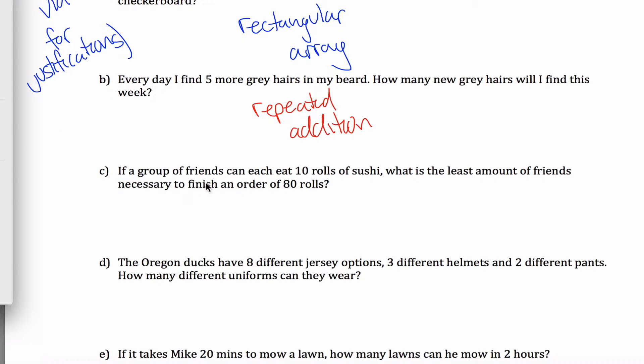The next one, if a group of friends can each eat 10 sushi rolls, what is the least amount of friends necessary to finish an order of 80 rolls? Okay, so first note that this is a division problem, not a multiplication problem. What kind of division? Well, we have two, partitive and measurement. In the partitive method, you are told how many groups you have, whereas in the measurement method, you are told the size of the groups. So I have 80 rolls, but what the question comes down to is what is this 10? Is this the size of my groups, or is this the number of groups?